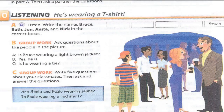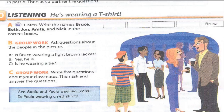Exercise 10, writing: He's wearing a T-shirt. Listen and write the names Bruce, Beth, John, Anita, and Nick in the correct boxes. In this exercise you will listen and then write which one is Bruce, Beth, John, Anita, and Nick, then write the names in the boxes.